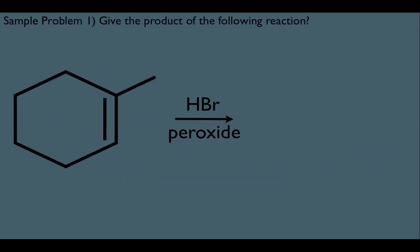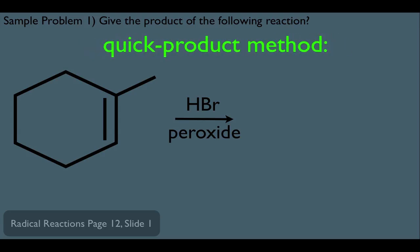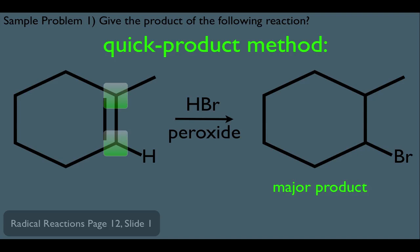Now let's focus on the quick product method. If we're given a problem and we want to predict the product, we want to get quickly to the product on an orgo exam because time is of the essence. If you see HBr with peroxide and an alkene, you'd be thinking of this reaction. Since we know this is an anti-Markovnikov reaction, we add the Br to the carbon that has more hydrogens. The top carbon has no hydrogens, just a methyl group, but the bottom carbon has one hydrogen — so we place the Br on the bottom carbon. This would be our major product.